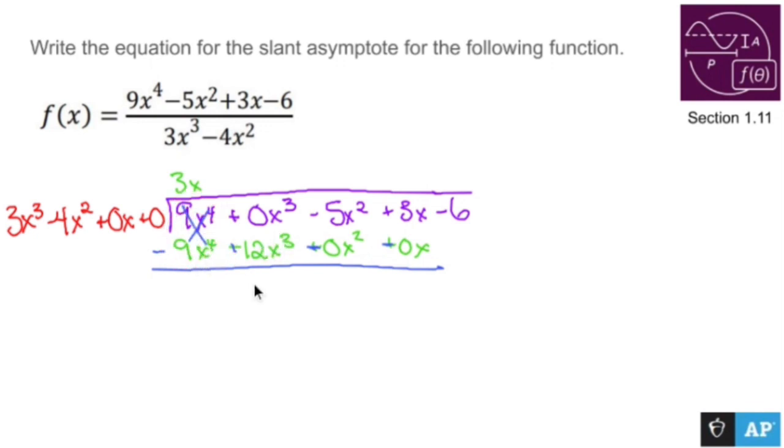This will disappear. This will become regular 12x to the third. Drop down the minus 5x squared. Drop down the 3x. And always drop down the negative 6, even though it's not that important. Now why did I just whisper that? How dare I say it's not that important?